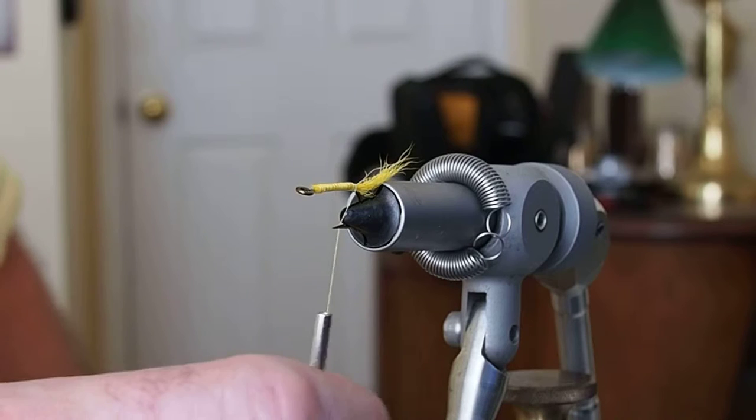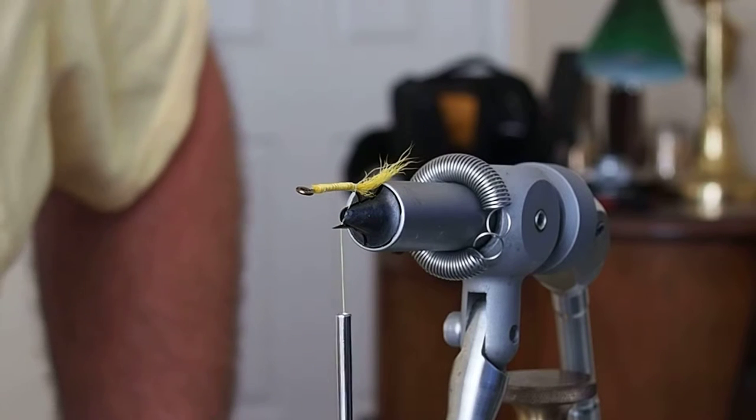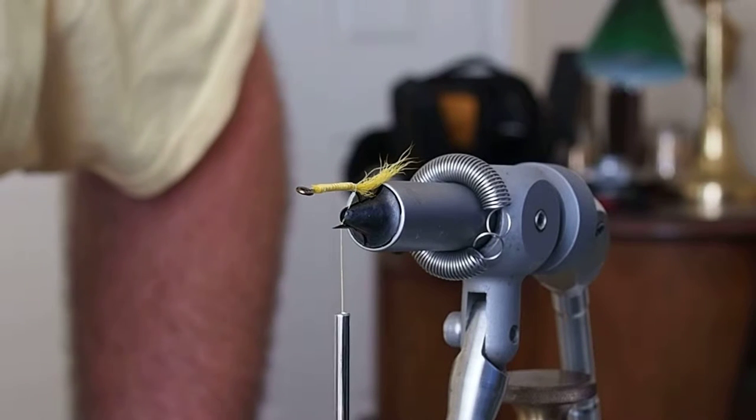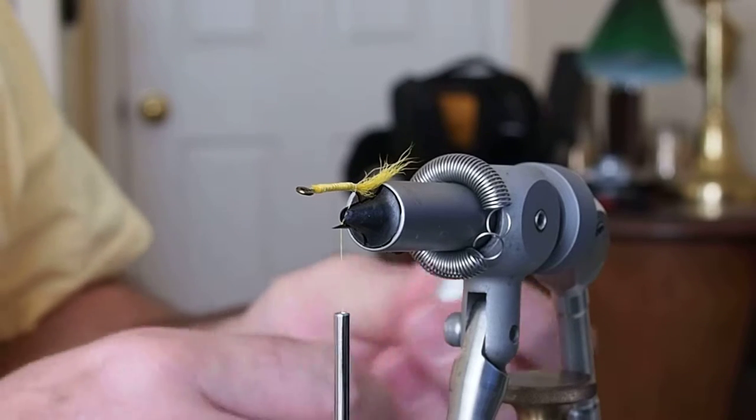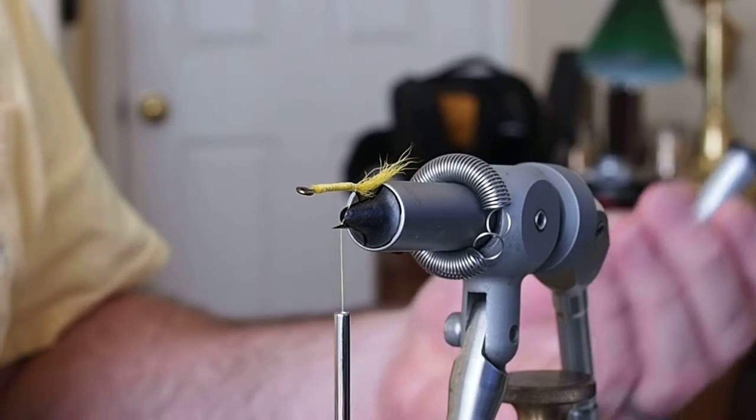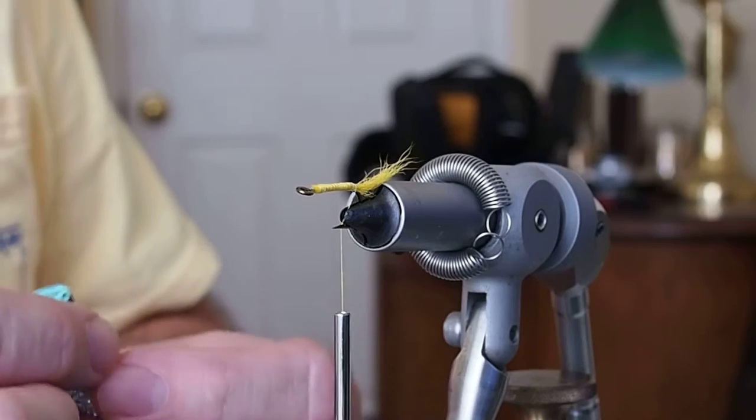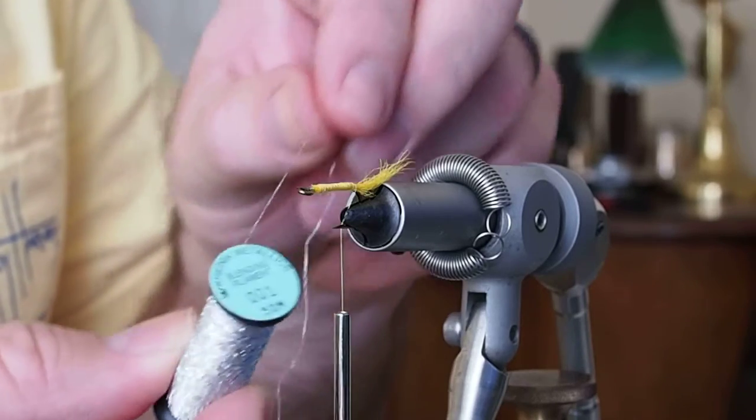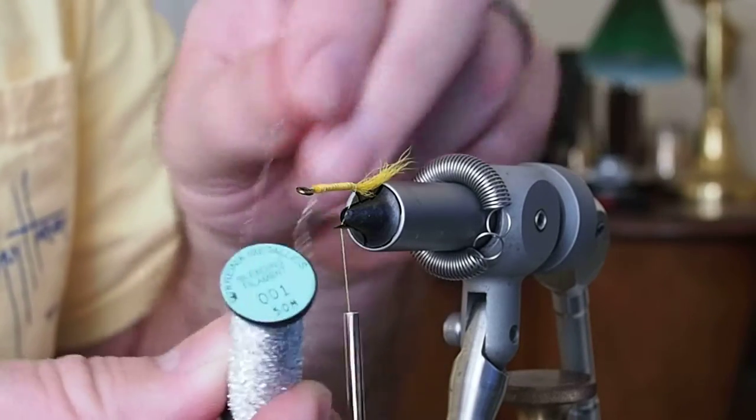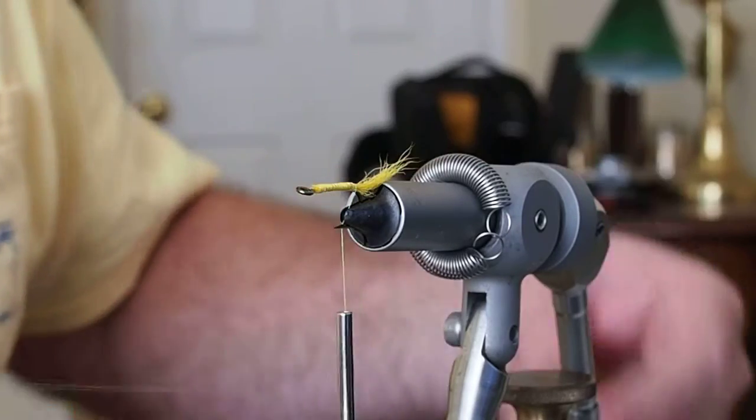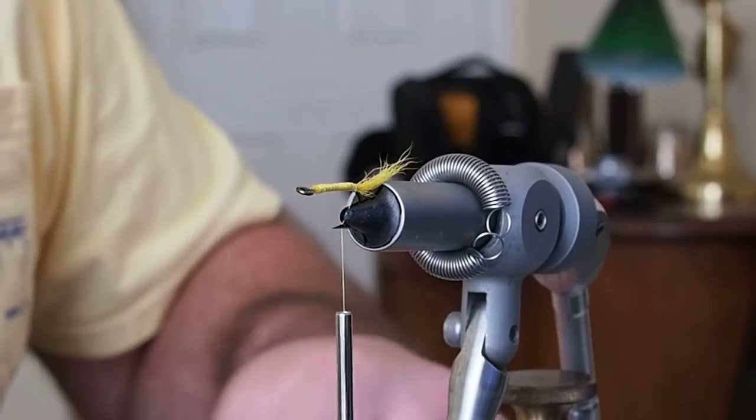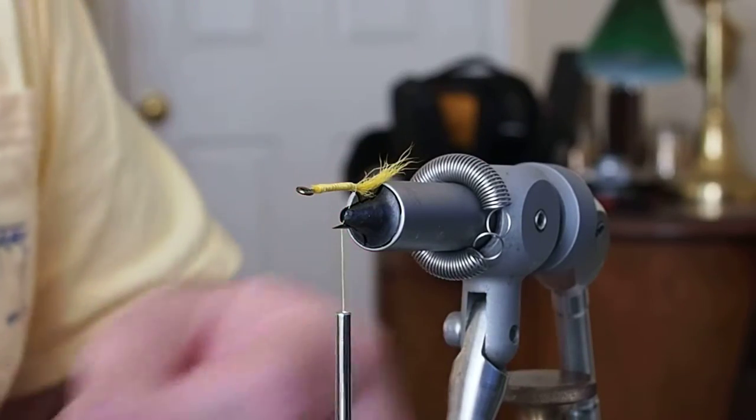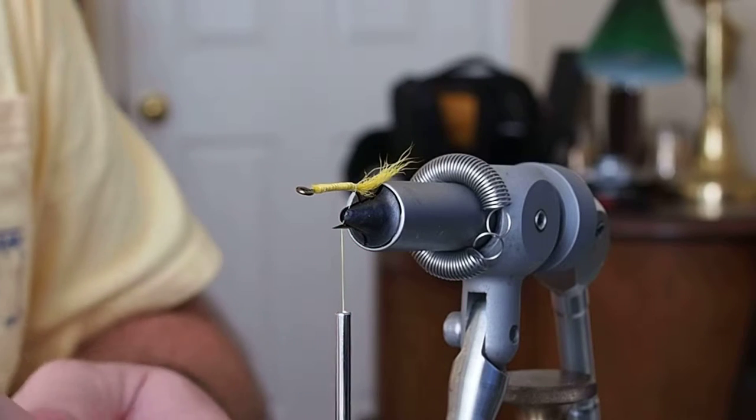The next material it calls for is some sort of tinsel yarn. I'm not exactly sure that I have that, but I did find this sparkle thread. I'm sure you could just use Flashabou or Crystal Flash in a silver color. I'm going to go ahead and use this thread because that's what I have on hand.